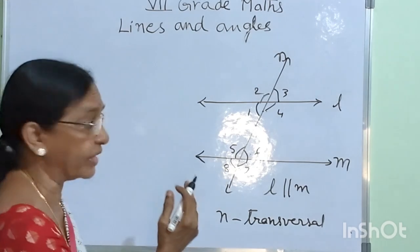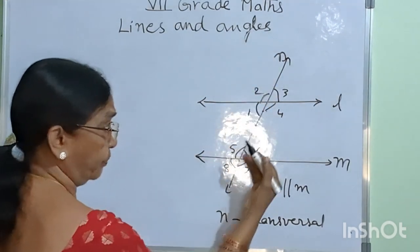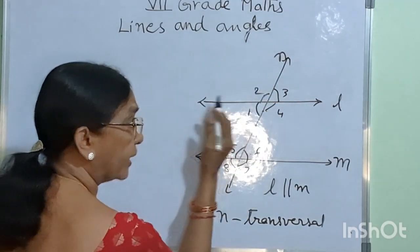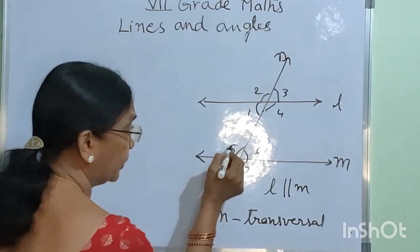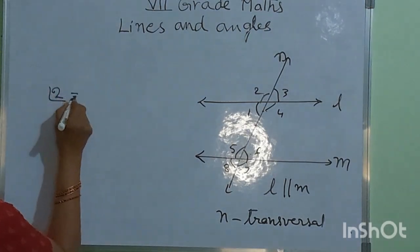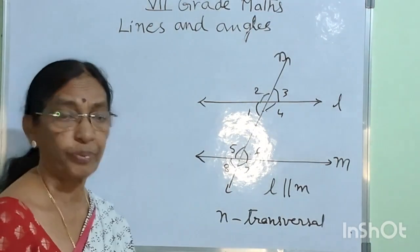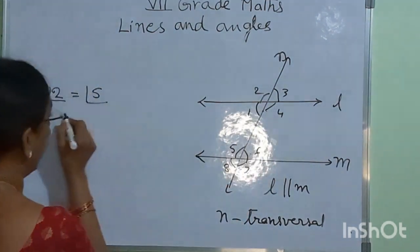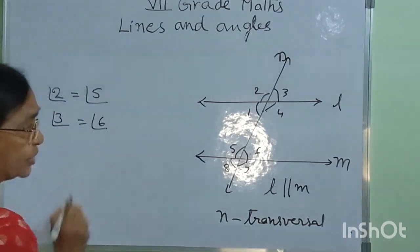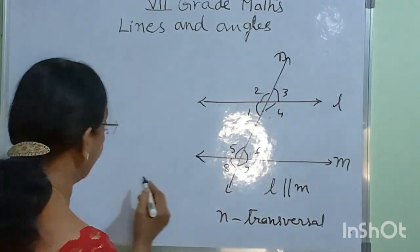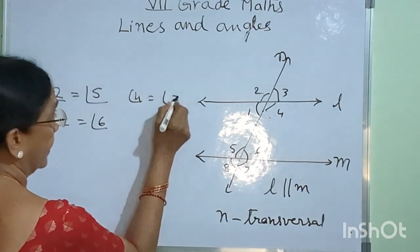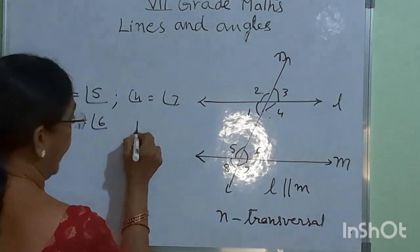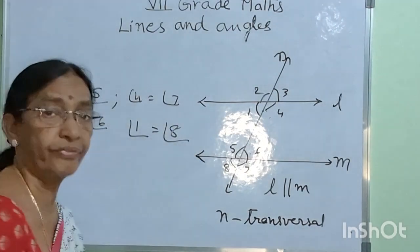They are lying on the same side of the transversal and on the same position of the two parallel lines. They are above the parallel lines and on the left side of the transversal. Therefore angle 2 and angle 5 are one pair of corresponding angles and they are equal. Angle 3 and angle 6 are another set of corresponding angles. Angle 4 is equal to angle 7, this is one set. And angle 1 and angle 8 are another set of corresponding angles.